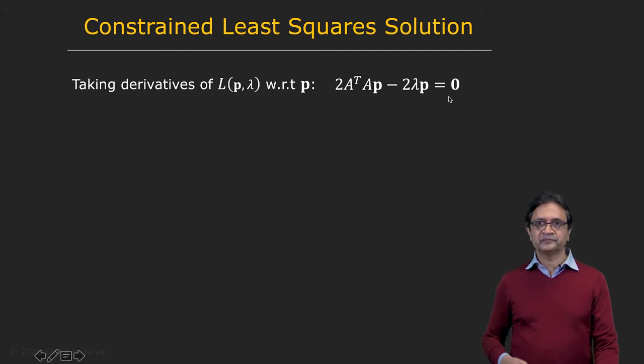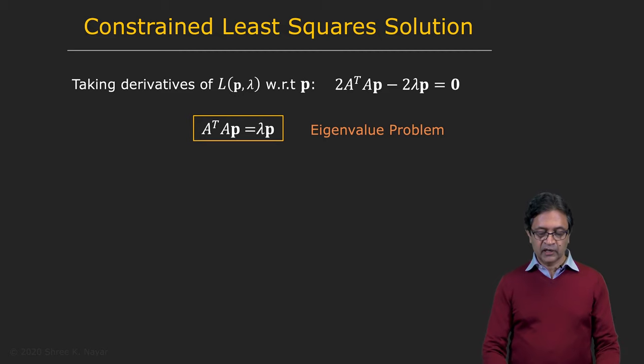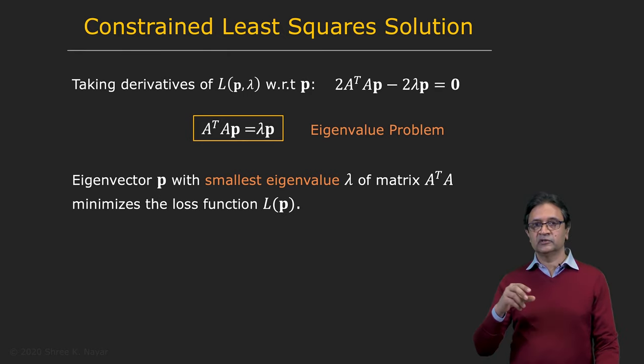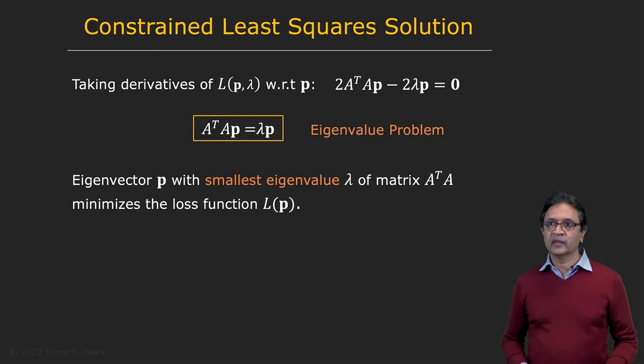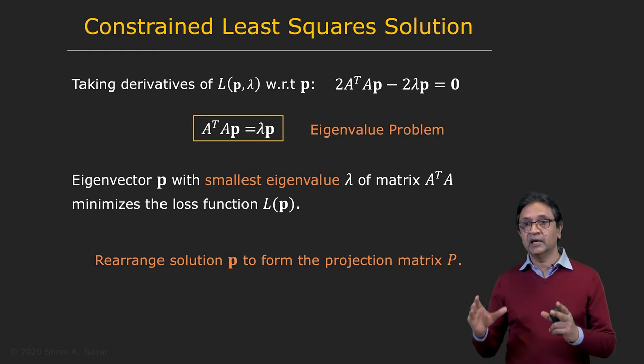And it turns out then that finding the P that minimizes L is equivalent to solving the well-known eigenvalue problem. That's what you're seeing right here. In other words, the P that we're looking for is the eigenvector corresponding to the smallest eigenvalue of A transpose A. We simply take A transpose A and find its eigenvalues and eigenvectors. And the eigenvector that corresponds to the smallest eigenvalue of A transpose A is the projection vector P that minimizes the loss function. So once we have that, we can rearrange the elements of P to get a projection matrix P.